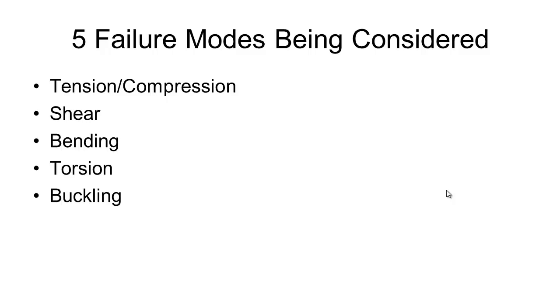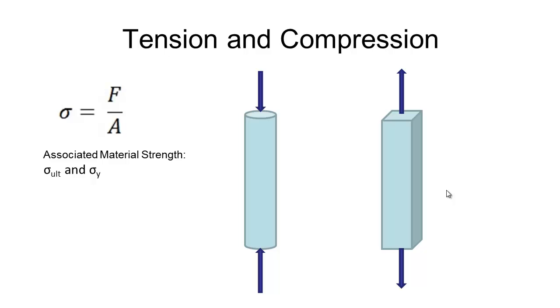So tension and compression, we've either got two forces going towards each other or two coming away, so here's our section in compression and a section in tension. The stress is just simple stress, so stress equals force on area. And the material strength we need to consider when doing tension and compression is the ultimate tensile strength and the yield strength of the material. So doing basic tension and compression calculations should hopefully be no drama for you guys.